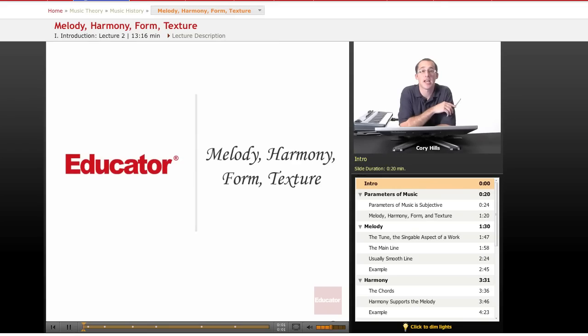Hello and welcome back to Music History at Educator.com, our second overall lesson. Today we are starting work on the first four parameters of music that I briefly mentioned in the first lesson, and that'll be melody, harmony, form, and texture. So let's just jump right in.